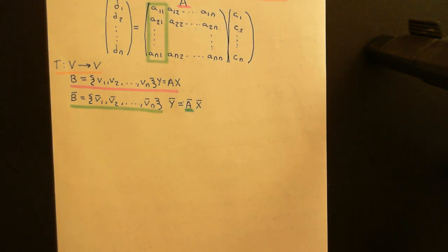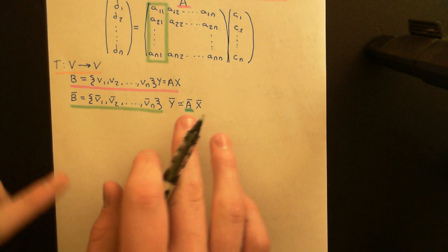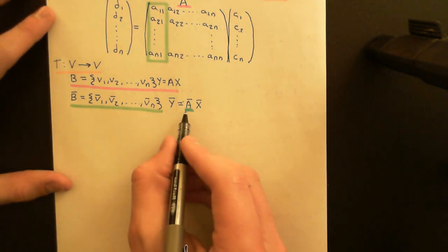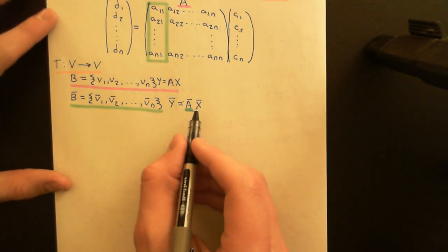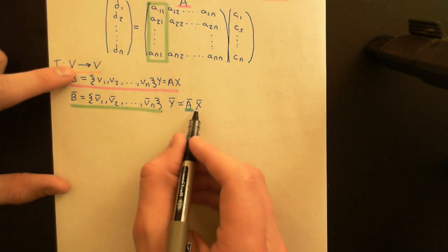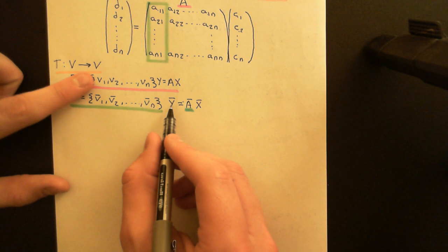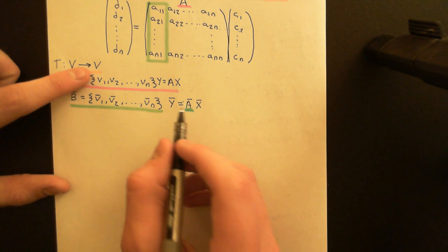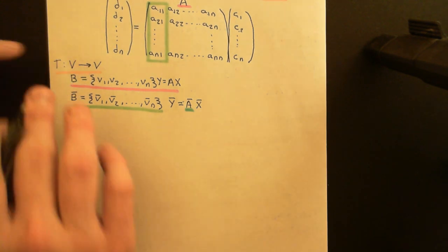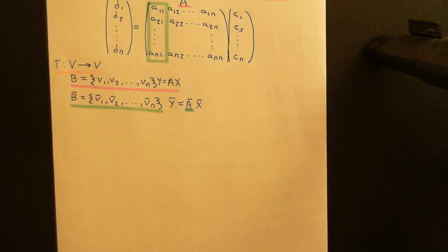I just want to change the basis I'm using, but the idea is still the same: I want a matrix representing the linear operator, taking a coordinate in the domain and mapping it onto a coordinate in the codomain, consistent with the linear operator.